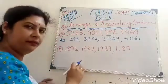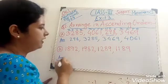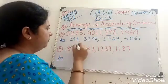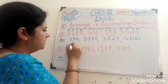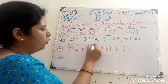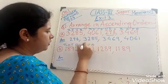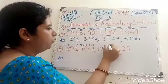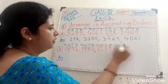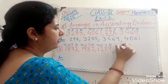Now do the same with the next question. Arrange in ascending order. Again we put the place value: 1's, 10's, 100's, 1000 — for each of the four numbers.